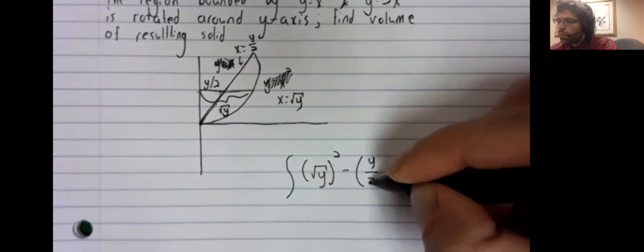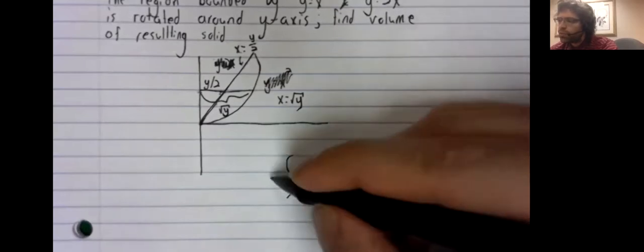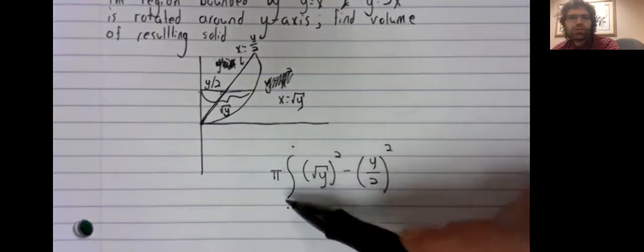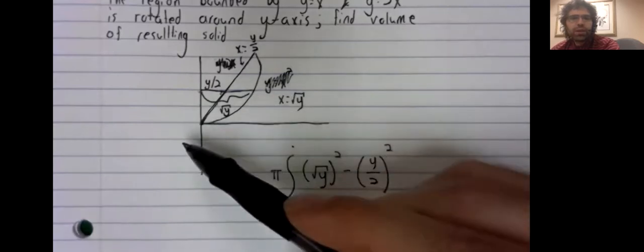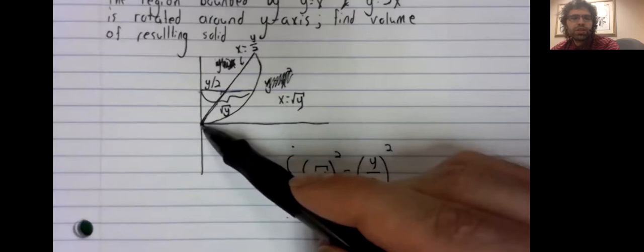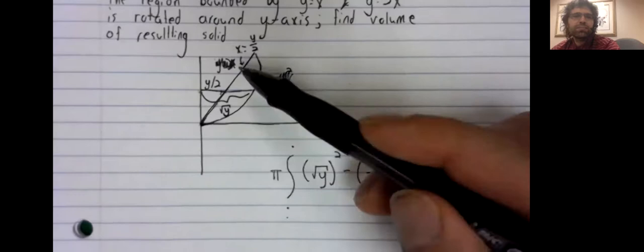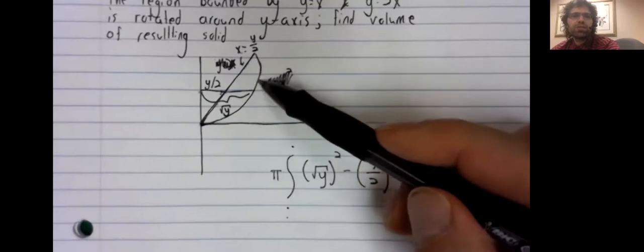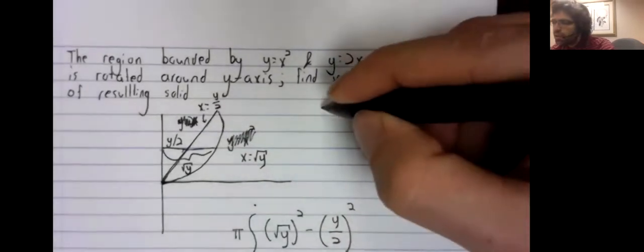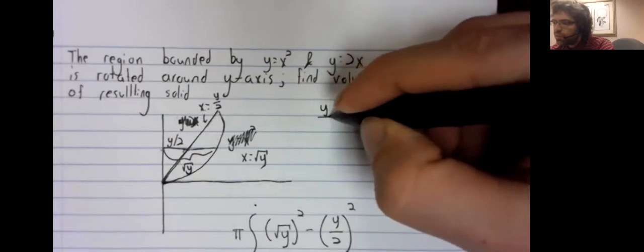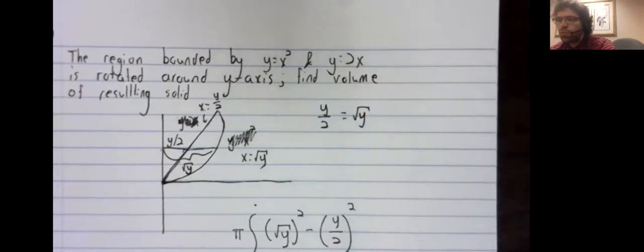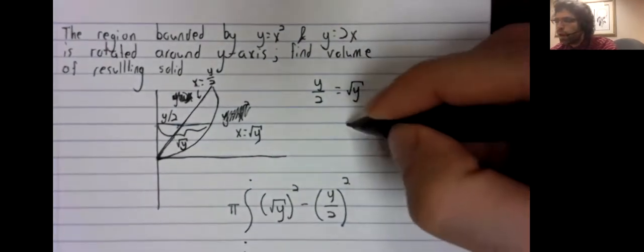We're not quite ready for the fundamental theorem yet. We need limits of integration. And we see this region begins here where these curves meet, and it ends here again where these curves meet. So we'll set y over 2 equal to the square root of y.